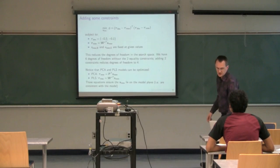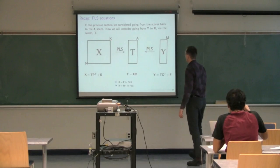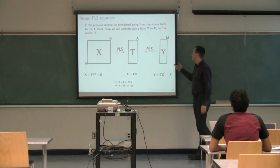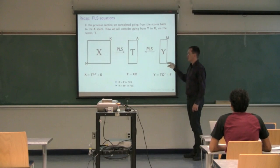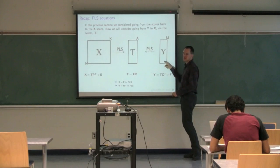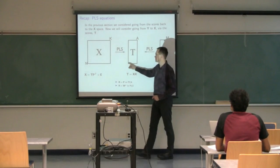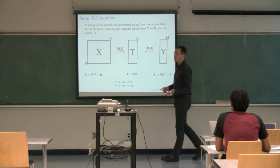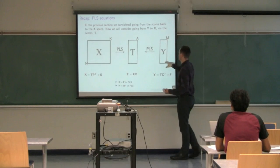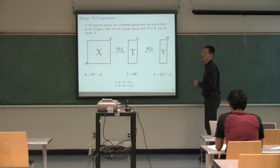In this particular section, we're going to be more interested in going from our Ys back to our original basis. So given a new desired setting for Y that we would like to achieve, we'll first go back to the scores, and then from the scores go back to the Xs. By the end of this class, we'll be able to go straight from the Ys to the Xs, while still obeying what the scores are doing internally.